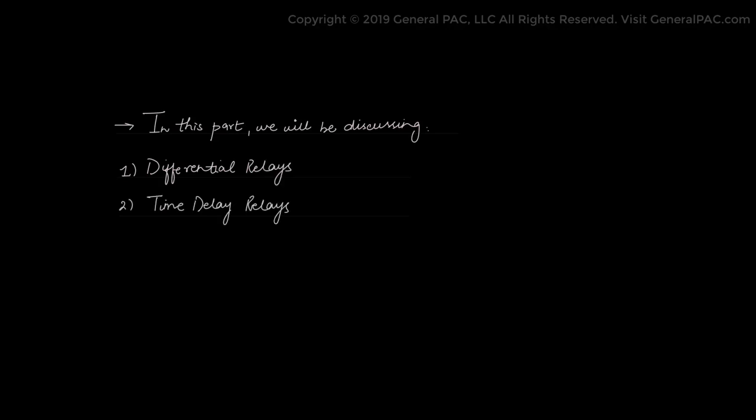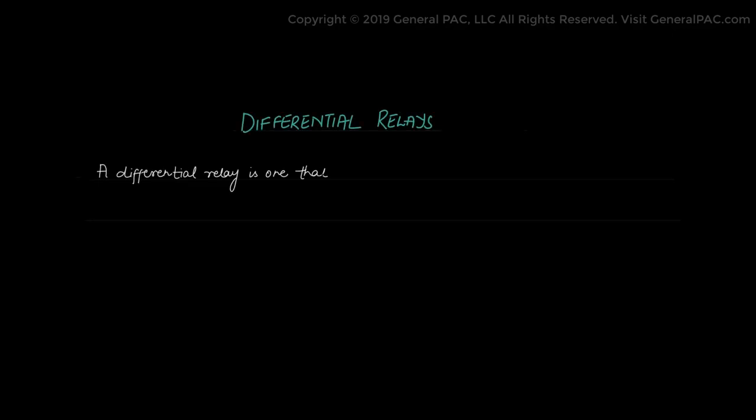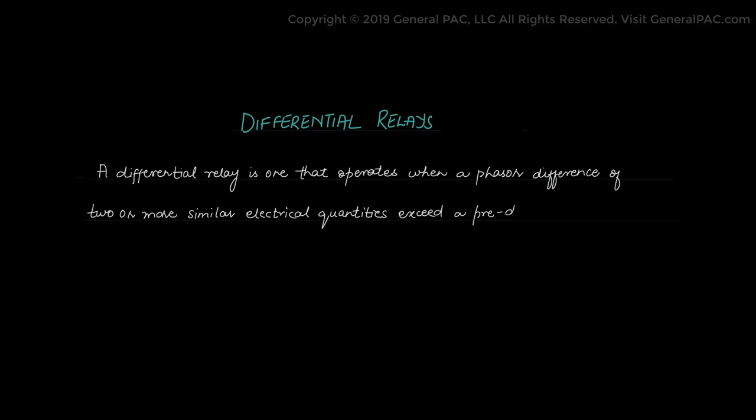The fifth type of relay we will be discussing is a differential relay. A differential relay is one that operates when the phasor difference of two or more similar electrical quantities exceeds a pre-determined value. The relay would operate a protective device or circuit breaker. When we say phasor, we are talking about a magnitude difference, an angle difference, or both — magnitude and angle — exceeding a set point of those two quantities.